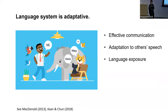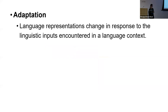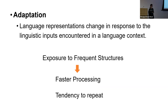In daily communication, we interact with lots of different people, and we have such an adaptive language system that allows us to quickly get used to others' speech styles, including their use of words, phrases, and sentences. Such learning occurs through exposure, and people are sensitive to these linguistic inputs in their environment. In language comprehension, adaptation occurs when people get used to these linguistic inputs, and as a result, they become faster at processing frequent structures and are likely to adopt them when interpreting ambiguous inputs.